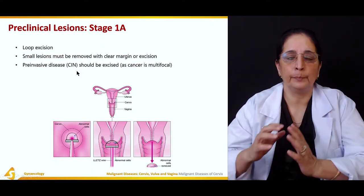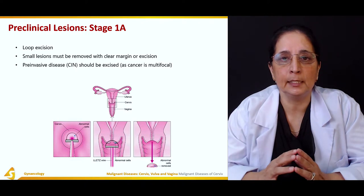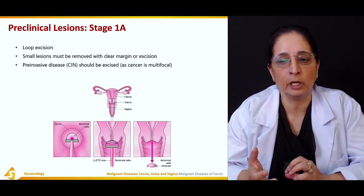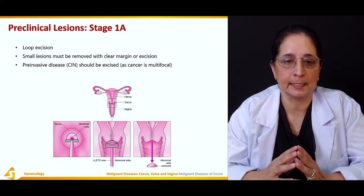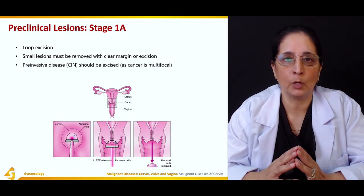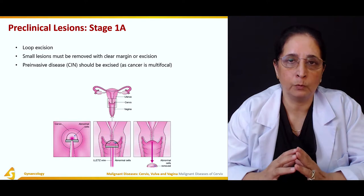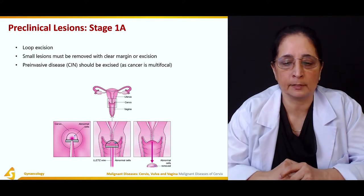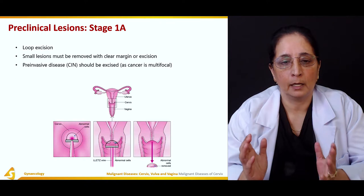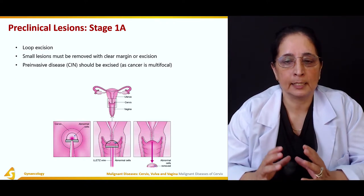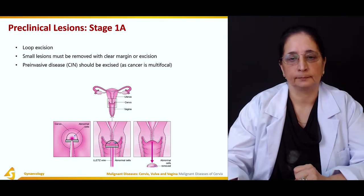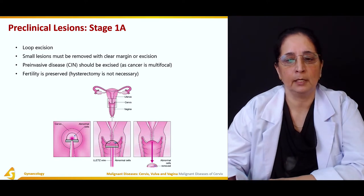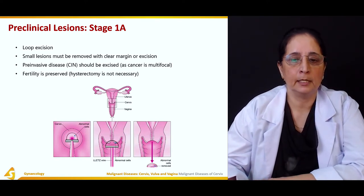Cervical intraepithelial neoplasia is a preinvasive disease — disease before invasion — so it should be excised. For preclinical lesions at stage 1, the wire loop is used to remove the abnormal cells or cancerous tissues, and it is always good to remove the entire lesion with clear margins. Usually fertility is preserved; if hysterectomy is not necessary, fertility is preserved.